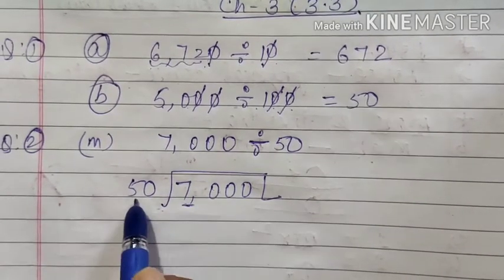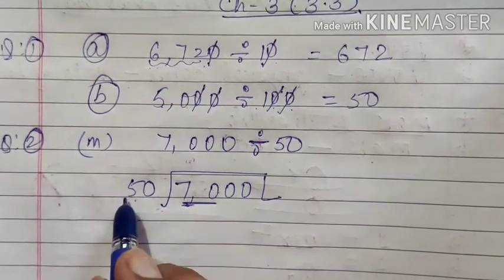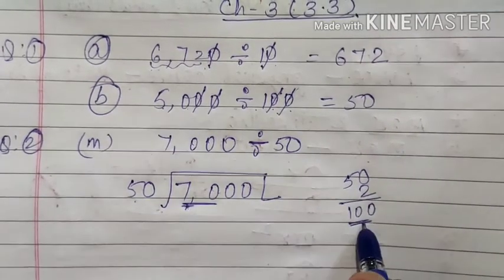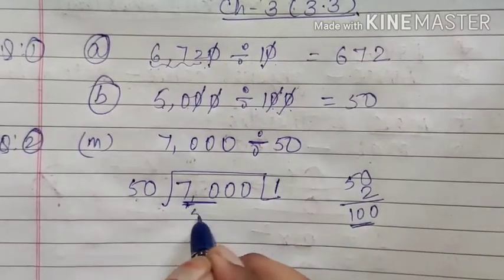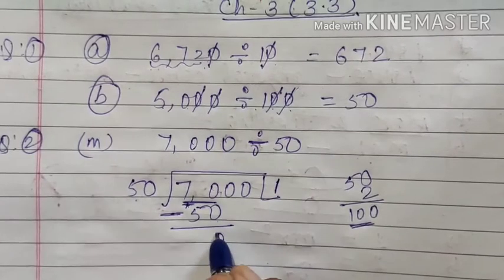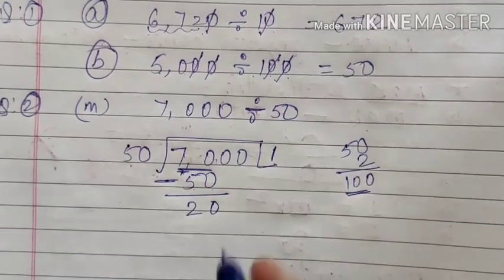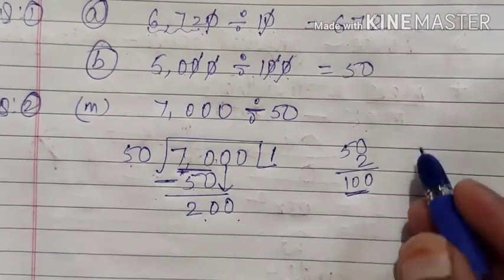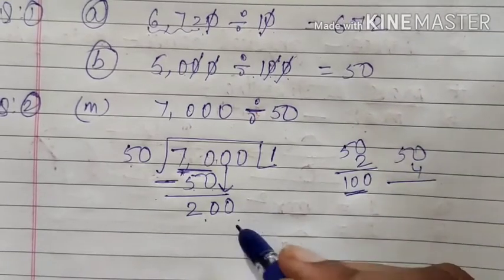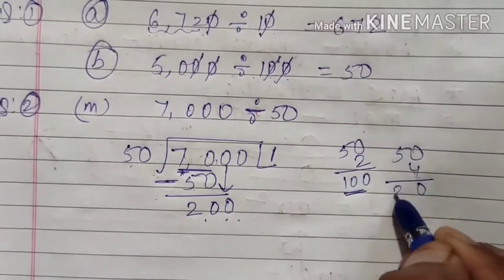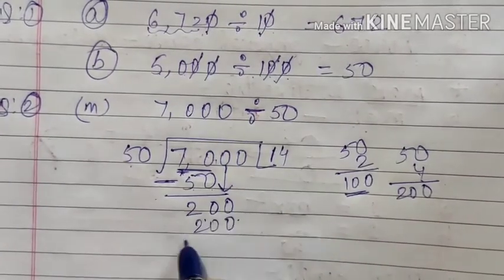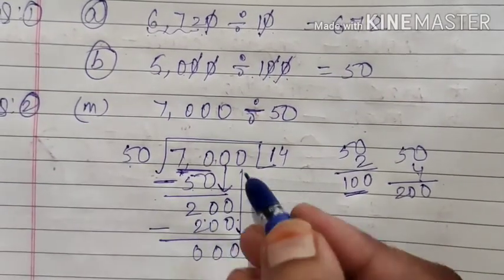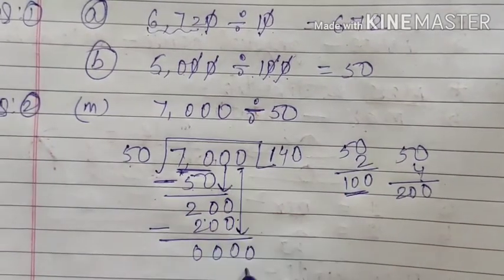So first we will take 7. Since 7 is less than 50, we will take 70 — two digits. 50 ones are 50; 50 twos are 100, which is greater than 70, so we will not go for 100. We write 1, meaning 50 ones are 50. Subtraction: 0 minus 0 is 0, and 7 minus 5 is 2. Now we have remainder 2, and we bring down the next digit 0, giving 200. Looking at the table of 50 up to 200: 50 times 4 gives 200. Subtraction gives 0. We bring down the last 0, and quotient digit is 0. So the quotient is 140 with remainder 0.